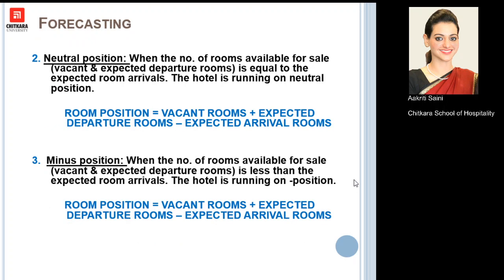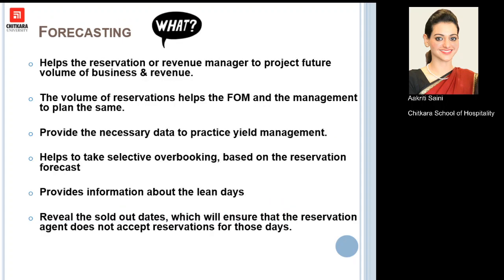Moving on to the neutral position: in the plus position the rooms available for sale were more than expected arrivals, whereas in the neutral position both figures are equal. The room position formula remains the same. For the minus position, the number of rooms available for sale is less than the expected room arrivals, so the hotel is running on a minus position.